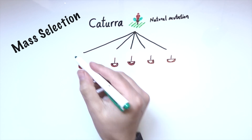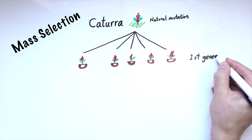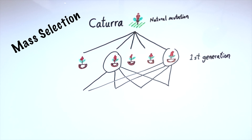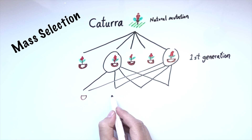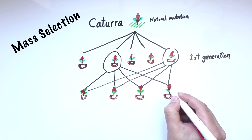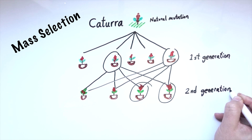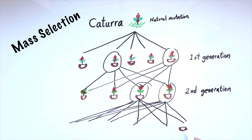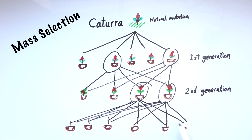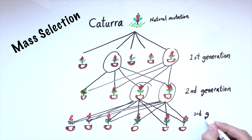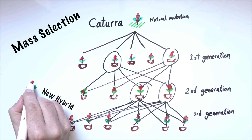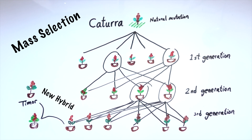In a process known as mass selection, the seeds from the best performing original plants are sown to make the next generation. This process is repeated for each successive generation. New hybrids such as the catimor have been made with the caturra and timor varieties as parents.